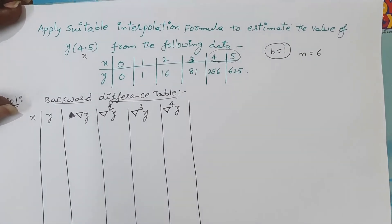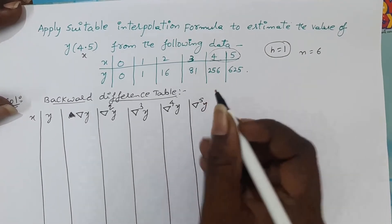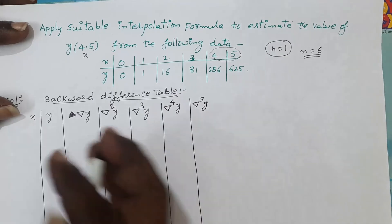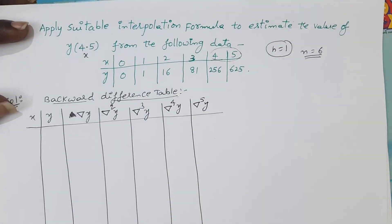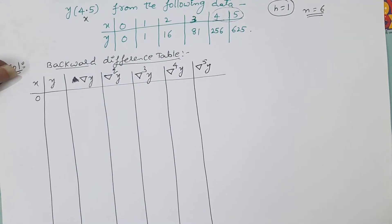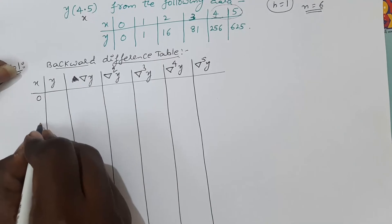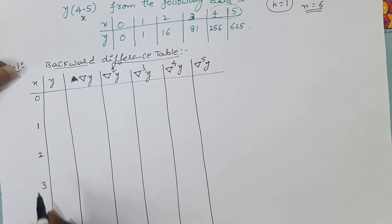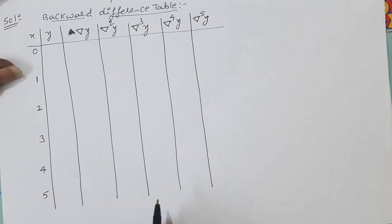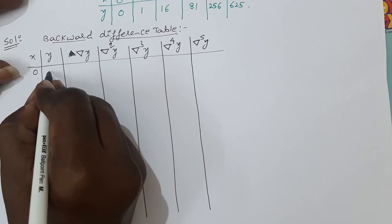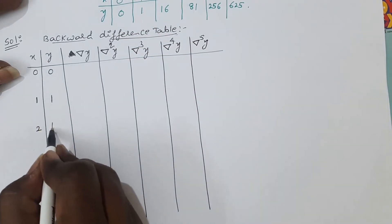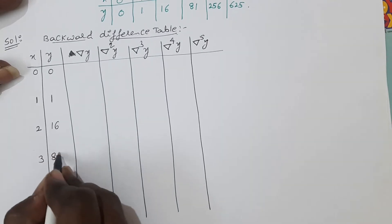The second-order backward difference is ∇²y, ∇³y, and ∇⁴y, and so on up to ∇⁵y. Since totally six points are given, up to fifth-order backward differences exist. Write the x values in order: 0, 1, 2, 3, 4, 5. The y values at x = 0 is 0, at x = 1 is 1.